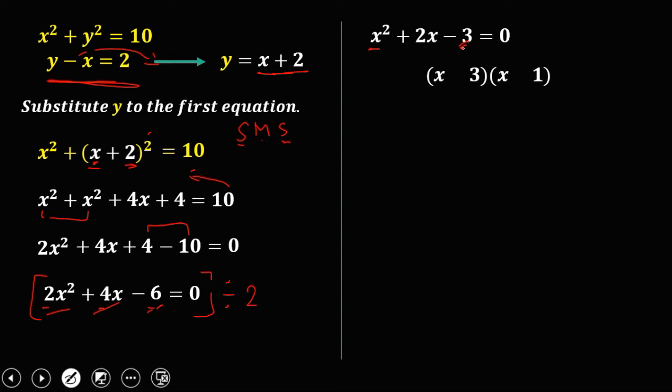So for us to know which of this number is positive and negative, we're going to use this pyramid multiplication. So 3 times x, this one is 3x. And x times 1, this one is x.